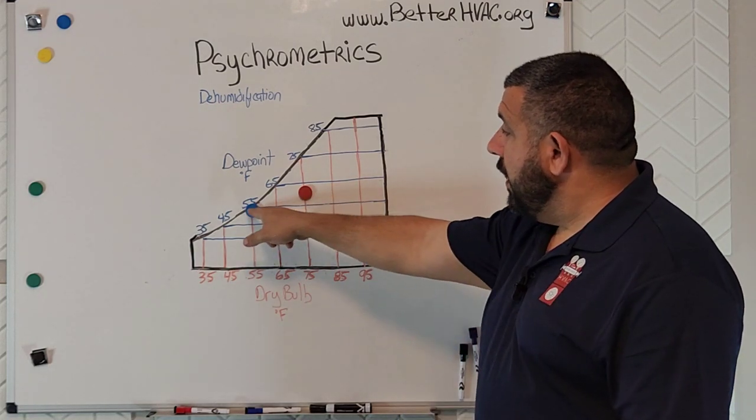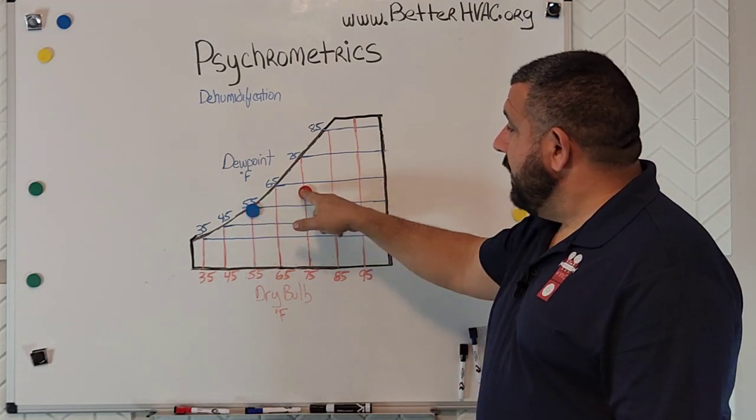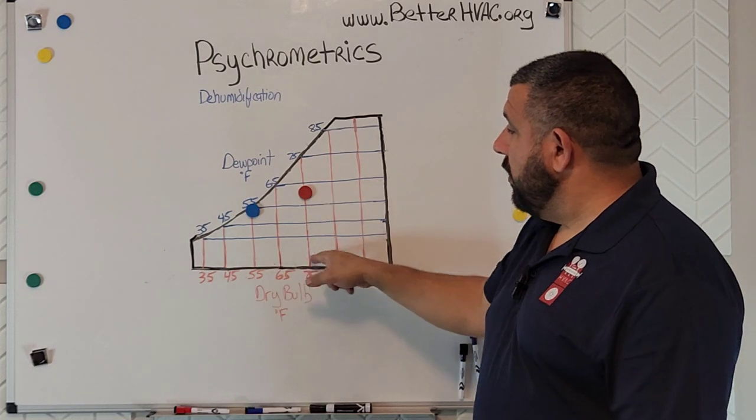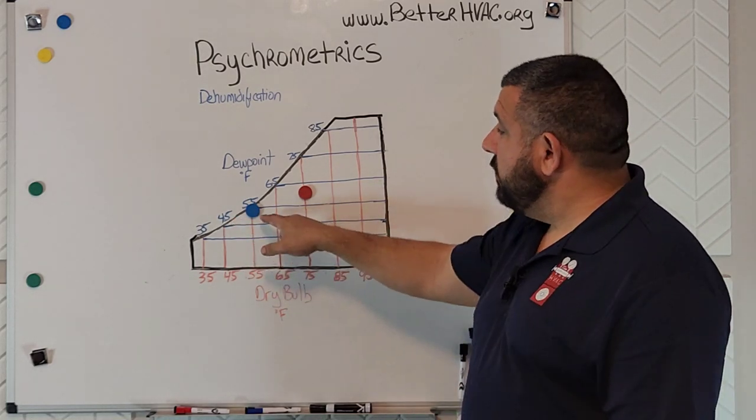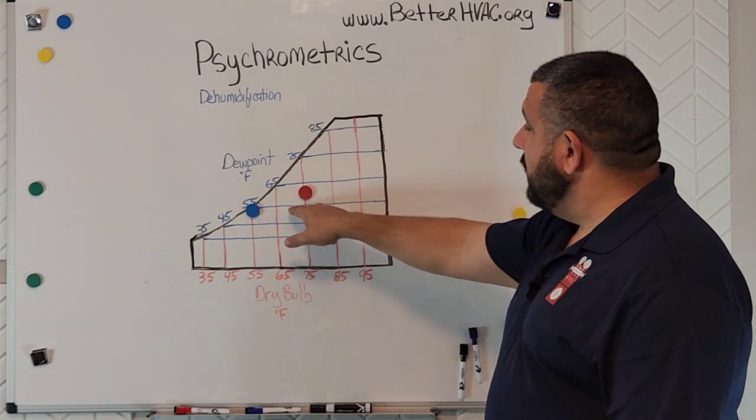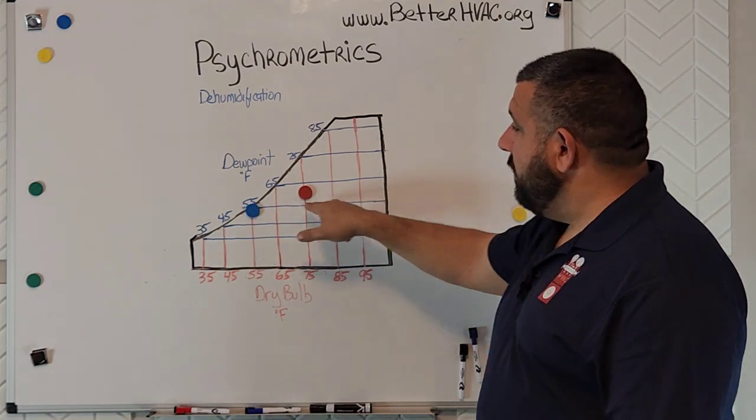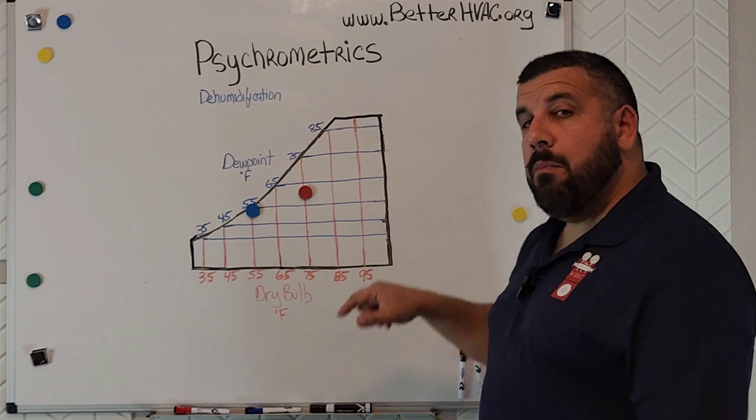So what happened here? Well, our supply air temperature is not only cooler than our return air temperature, so we've removed heat in the air conditioning process, but if you notice, it's also at a lower level in the psychrometric chart when we're talking about moisture.